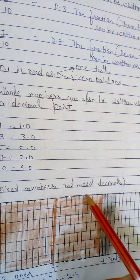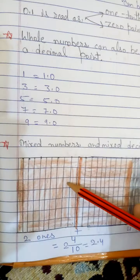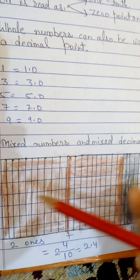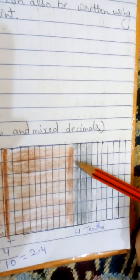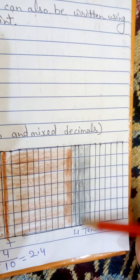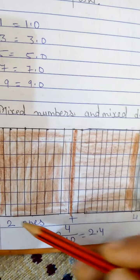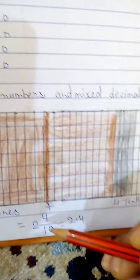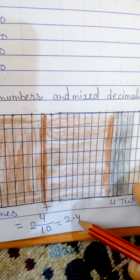Now let's see mixed numbers. Looking at the diagram, this block is completely filled — that's one. This one is also completely filled — another one. So one plus one equals two ones. Then look here: how many blocks? One, two, three, four — four rows completely filled out of ten rows. So that is four tenths — four upon ten. Therefore we write two ones and four upon ten, which means 2.4.